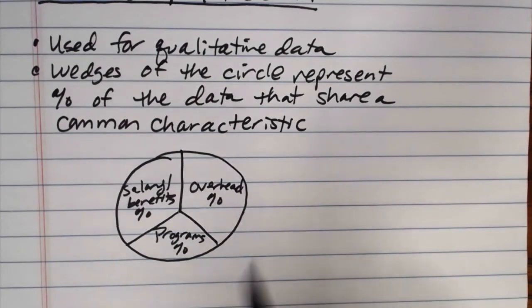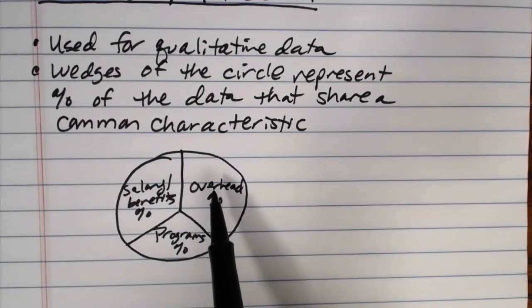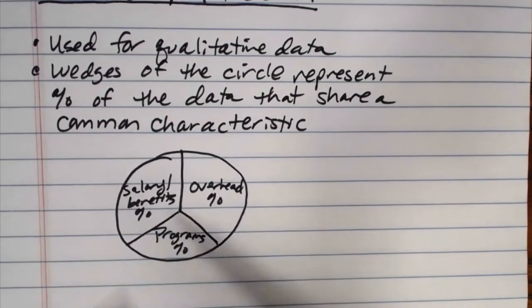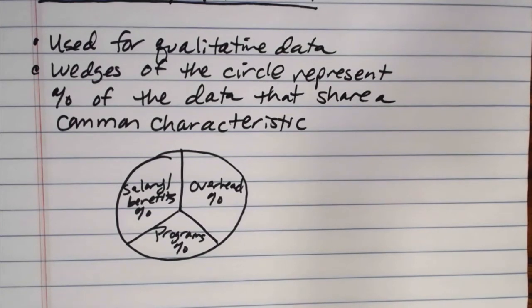Really the power of a circle graph or a pie chart is it can emphasize how a whole or a total of something is divided into different segments. So that's what a circle graph or a pie chart is really for.